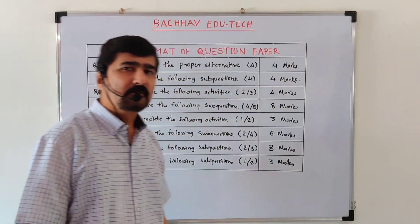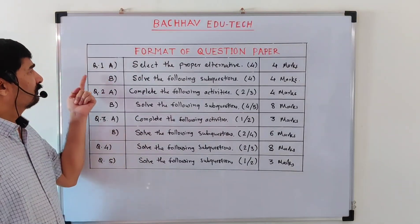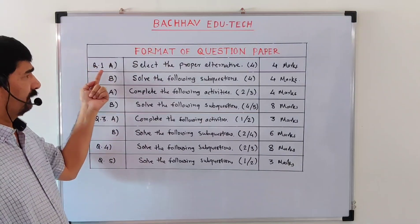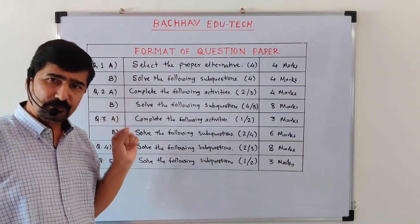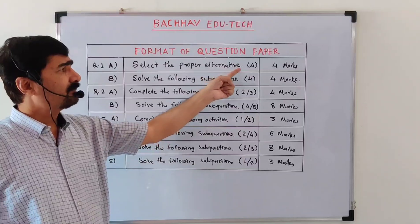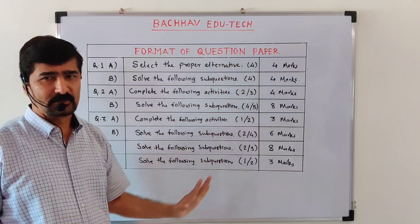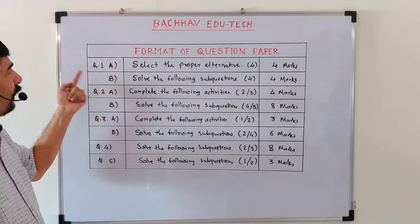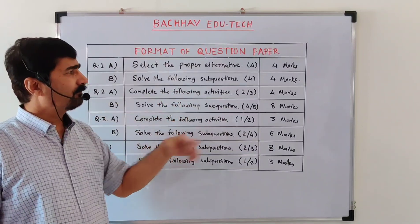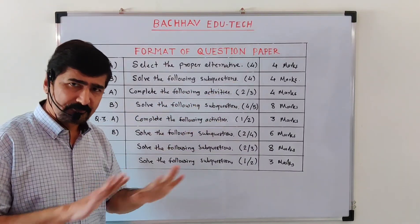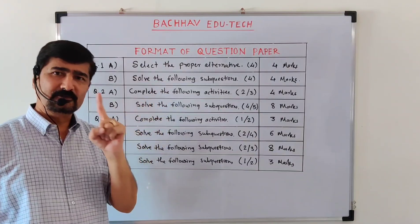Let us see the board question paper pattern for algebra. Question 1A is 'Select the proper alternative' — 4 marks. They will provide 4 questions and each carries 1 mark, totaling 4 marks. Question 1B is 'Solve the following sub-questions' — 4 questions with no option, each carrying 1 mark, totaling 4 marks.